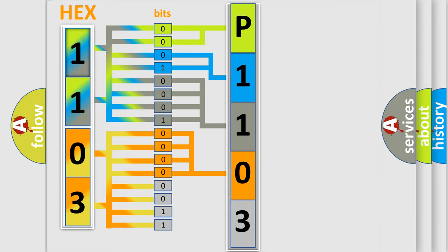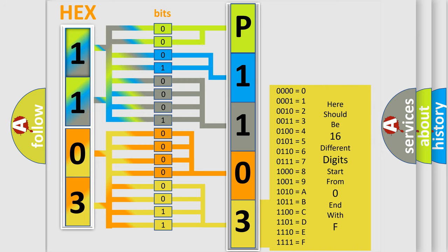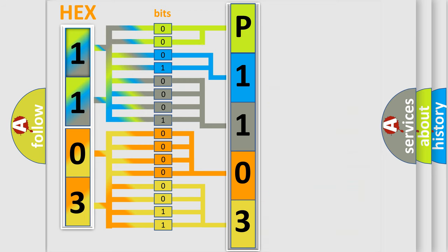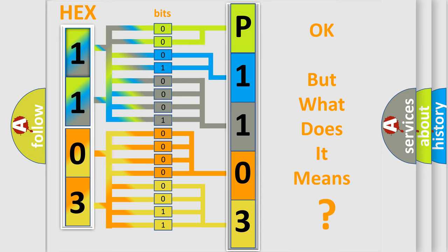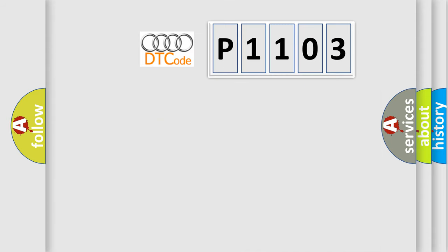The first four bits determine the fourth character of the code, and the combination of the last four bits defines the fifth character. A single byte conceals 256 possible combinations. We now know in what way the diagnostic tool translates the received information into a more comprehensible format. The number itself does not make sense to us if we cannot assign information about what it actually expresses.